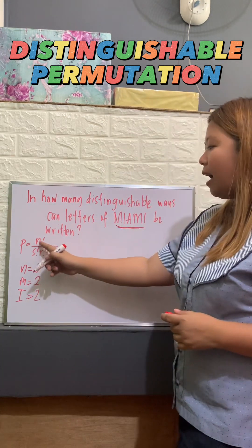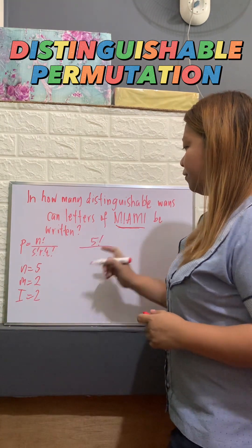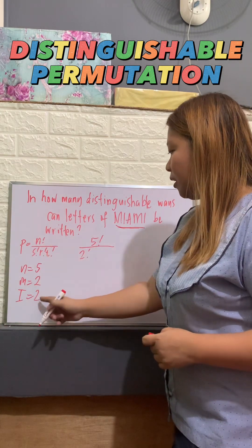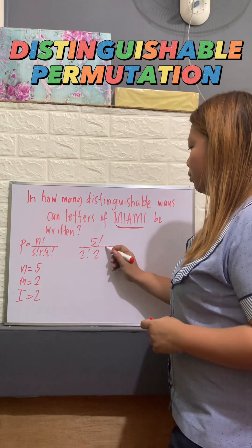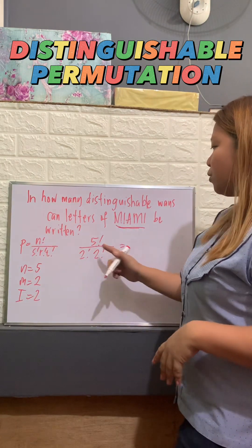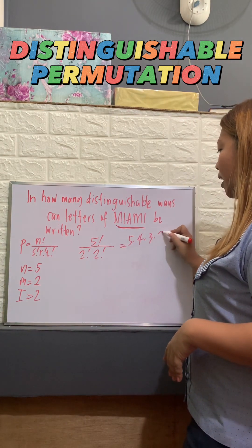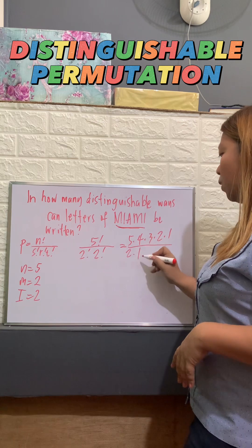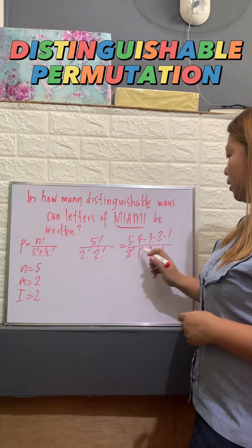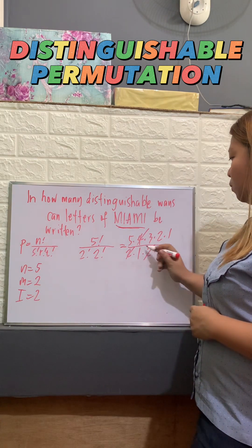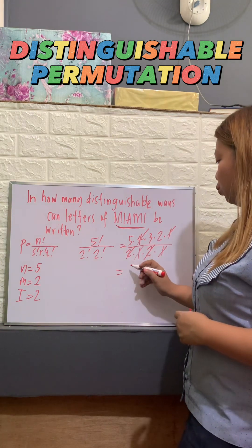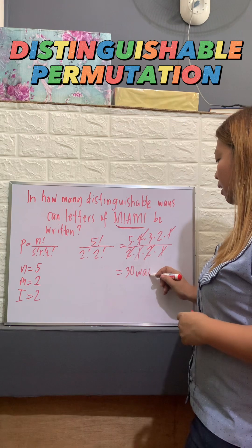So let's now apply the formula. Our N is 5, so: 5 factorial over S — which is M, so 2 factorial — over R — which is I, also 2 factorial. We have no T since only 2 objects are repeated. So we have 5 × 4 × 3 × 2 × 1 over 2 × 1 times 2 × 1. We can cancel to get 5 × 3 × 2 = 30. So, there are 30 ways.